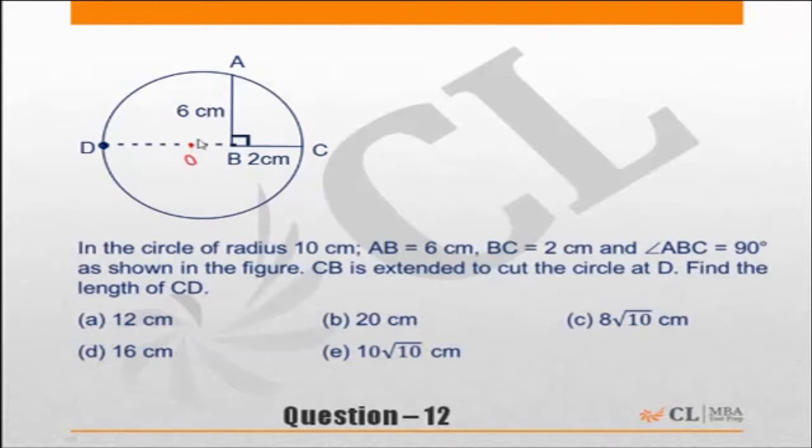In this question, if you consider the center on this line only, then this radius is going to be 10 and this height is 6. So Pythagorean triplet says that this space must be then 8.